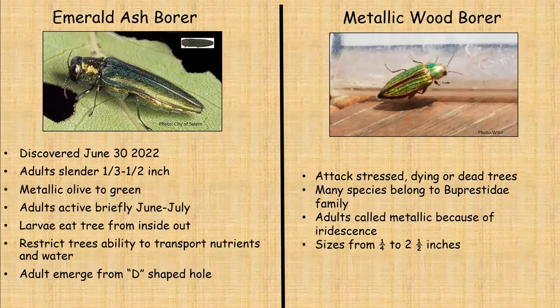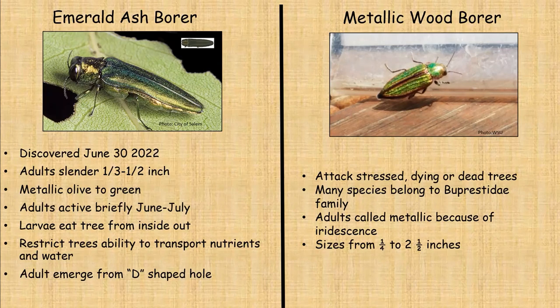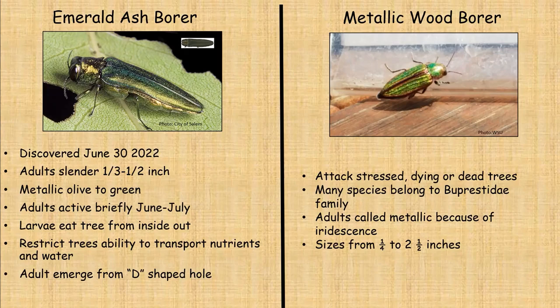Let's start with the emerald ash borer — our newest invasive pest found in our area, discovered on June 30th, 2022. The adults are slender, about a third to a half an inch long, and metallic olive to green. The adults are only active briefly from June to July, but it's the larval stage that causes all the problems because the larvae eat the tree from the inside out.